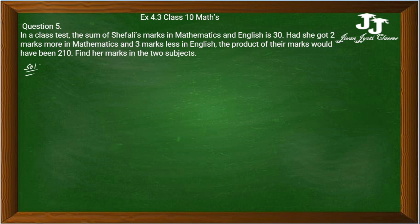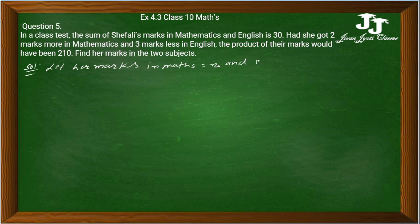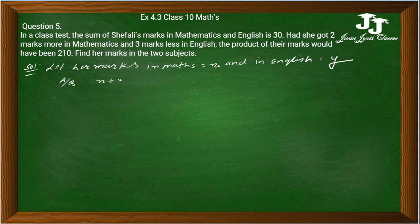Okay, तो चलिए शुरू करते हैं। A mark in math is called x and in English is called y. If we talk about the sum, x plus y is equal to 30, so x is equal to 30 minus y.